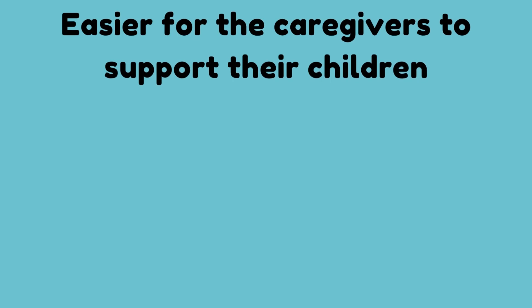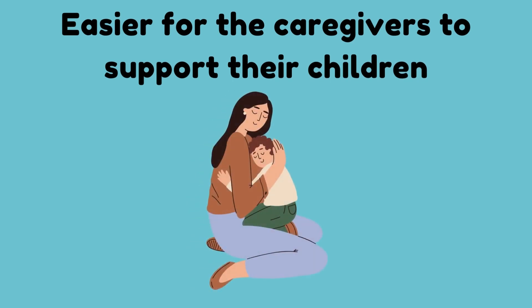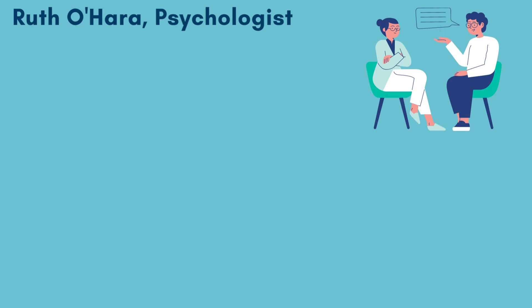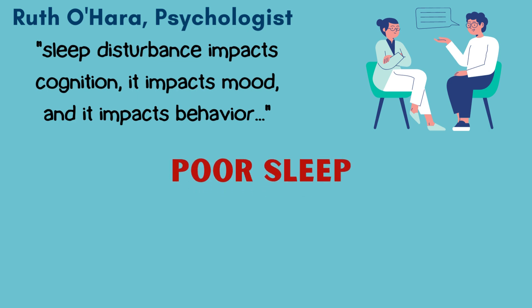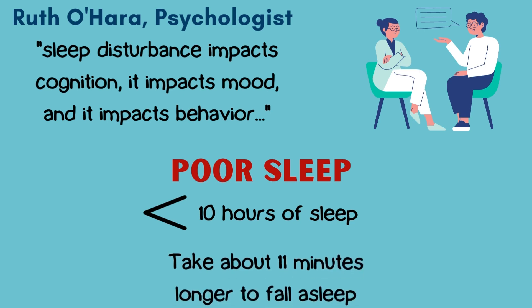Understanding what is causing the sleep problems can make it easier for caregivers to support their children. Sleep problems are among the most pressing concerns for caregivers and families of children with ASD, however how sleep affects behavior is talked about very minimally. A Stanford University psychologist, Ruth O'Hara, said sleep disturbance impacts cognition, it impacts mood, and it impacts behavior. Poor sleep is considered to be less than 10 hours for autistic individuals, and typically it shouldn't take more than 30 minutes for children to fall asleep — for ASD children it takes about 11 minutes longer than that.